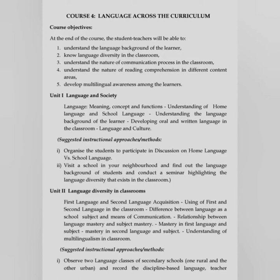Unit 1 is Language and Society: language — meaning, concept and functions; understanding home language and school language; understanding the language background of the learner; developing oral and written language in the classroom; language and culture. Unit 2 is Language Diversity in Classroom: first language and second language acquisition; using first and second language in the classroom; difference between language as a school subject and as a means of communication; relationship between language mastery and subject mastery; mastery in first language and subject; mastery in second language and subject; understanding multilingualism in classroom.